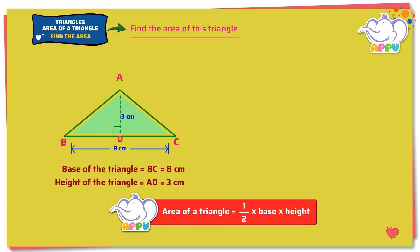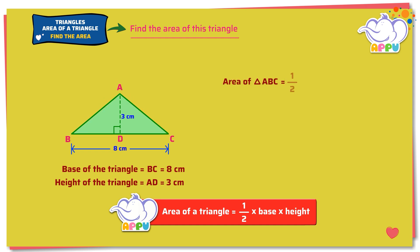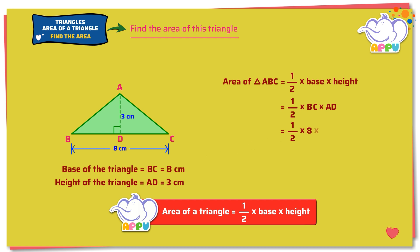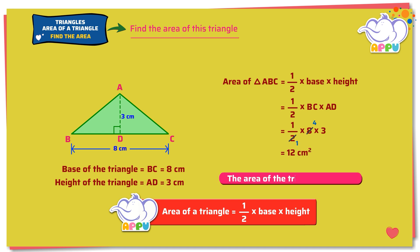Area of the triangle ABC equals 1 by 2 times base times height, equals 1 by 2 times BC times AD. 1 by 2 times 8 times 3. 2 divides 2 once and 2 divides 8 four times. Now 4 times 3 equals 12. So the area of the triangle is 12 square cm.